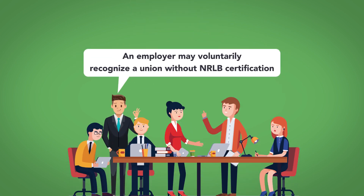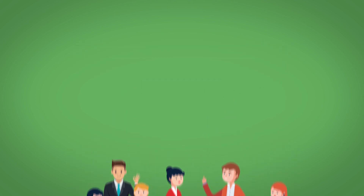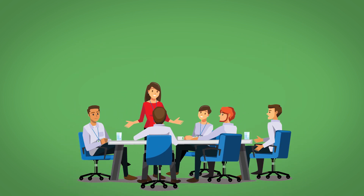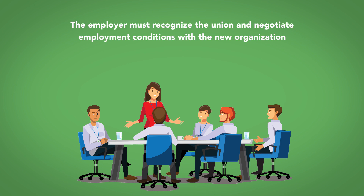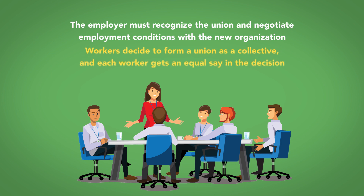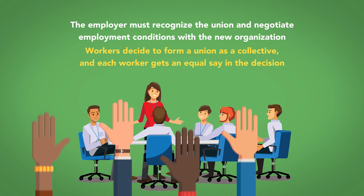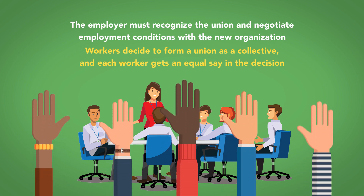Alternatively, an employer may voluntarily recognize the union without an NLRB certification. Once a union is certified, the employer must recognize the union and negotiate employment conditions with the new organization. Democratic voting is key to the union formation process. Workers decide to form a union as a collective, and each worker gets an equal say in the decision.